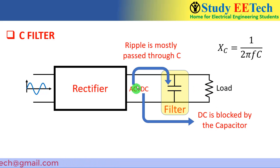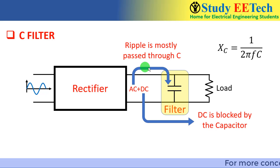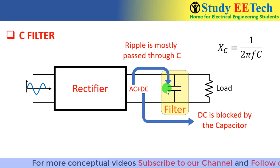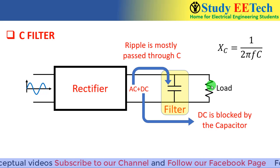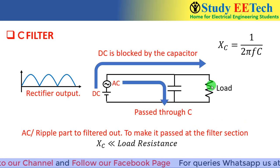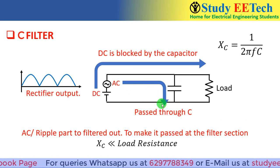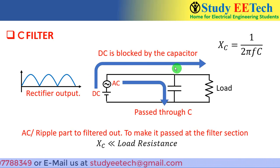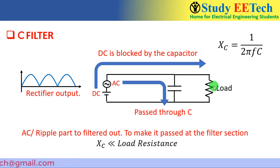For the AC part, we make the capacitor path impedance very low so most of the AC passes through the capacitor and does not appear at the load. This is achieved by making the capacitive reactance XC much much less than the load resistance. The AC is thus bypassed through the capacitor, and the DC coming from the rectifier is blocked by the capacitor from flowing back, appearing at the load terminal.